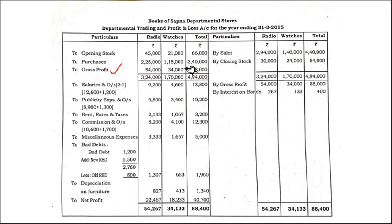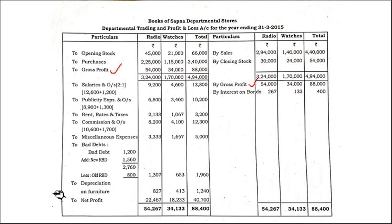The gross profit for the Watches department is 34,000. Gross profit brought down is written on the credit side of the profit and loss section. Then all revenue expenses are listed — starting with salaries.